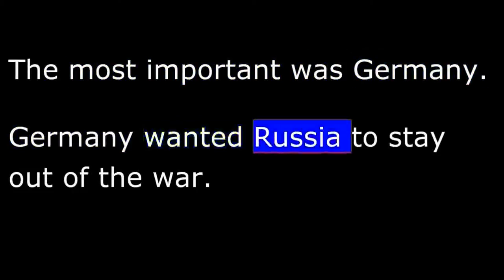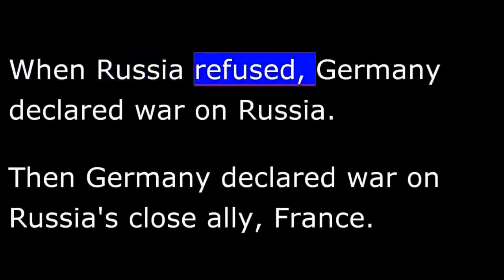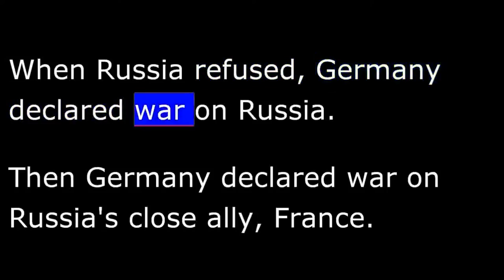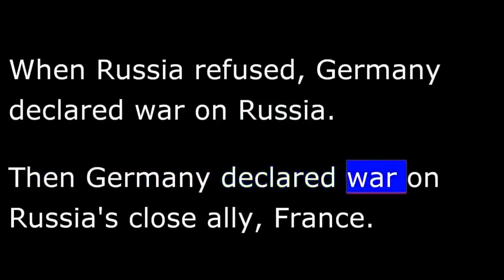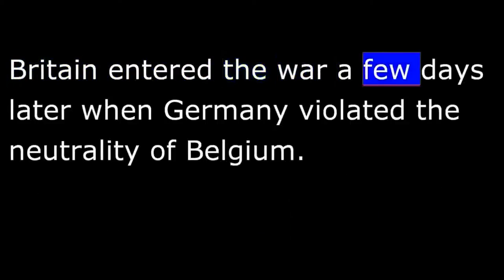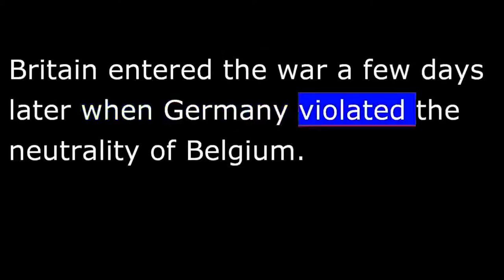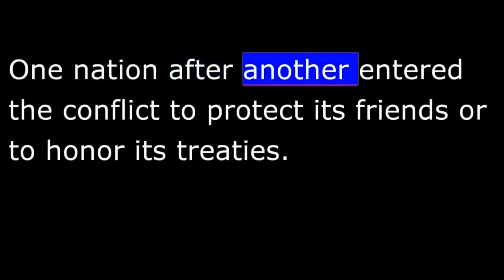Germany wanted Russia to stay out of the war. When Russia refused, Germany declared war on Russia. Then Germany declared war on Russia's close ally, France. Britain entered the war a few days later, when Germany violated the neutrality of Belgium. One nation after another entered the conflict to protect its friends or to honor its treaties.